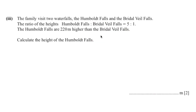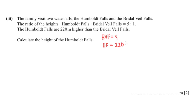The next question says the family visits two waterfalls and the ratio of the height is 5 to 1. The Humboldt Falls are 220 meters higher than the Bridal Veil Falls. We need to calculate the height of the Humboldt Falls. Let's name the Bridal Veil Falls as y, so Humboldt Falls equals 220 plus y.